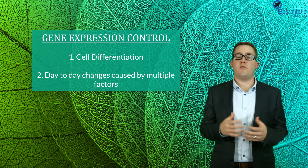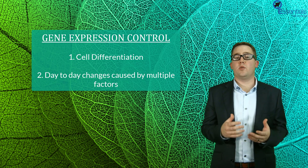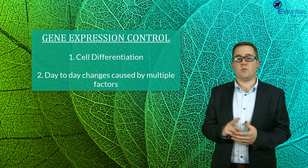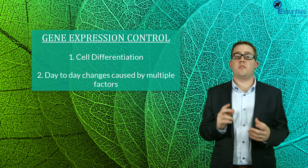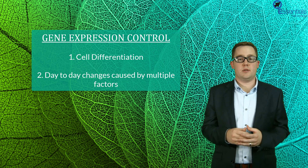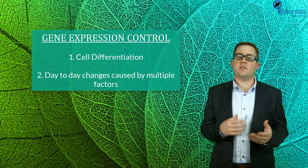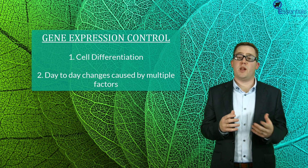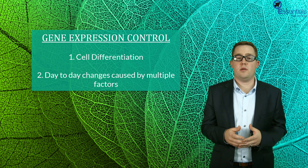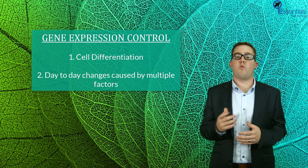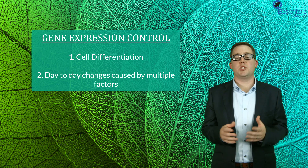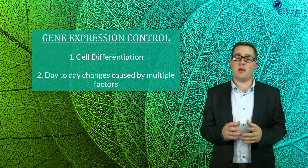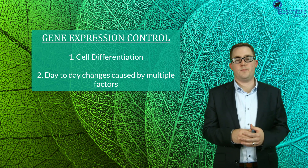The process by which gene expression is controlled is very important and can be looked at from two different angles. First, through looking at a process called cell differentiation, which mostly occurs when you are developing pre-embryo, and second, by looking at how the rate or presence of gene expression can change on a day-to-day basis depending on outside factors.